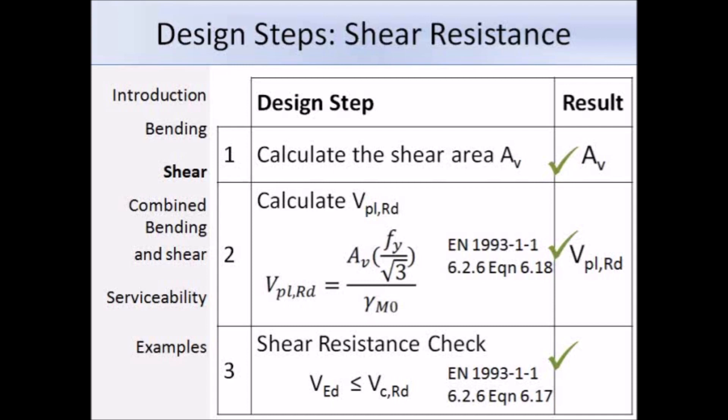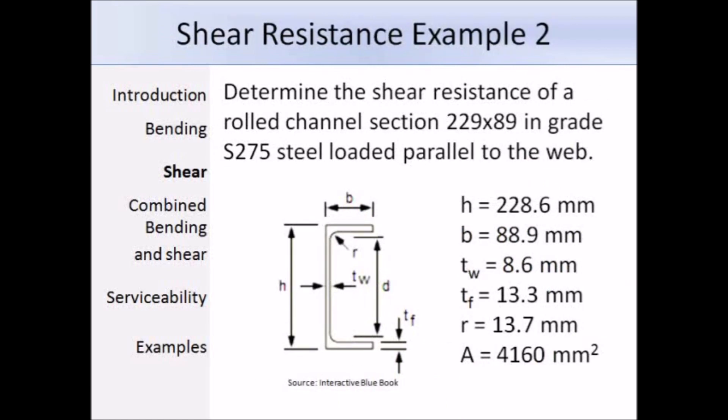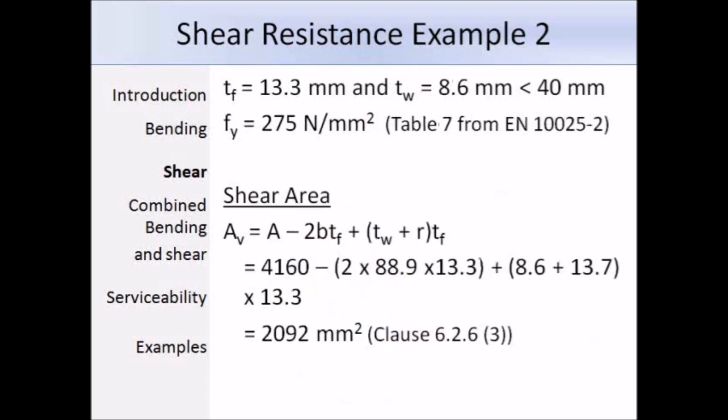Here is another example and I'll go through it step by step and then compare the results worked out by hand to the results worked out using the Master Series software. So here we have a rolled channel section, 229 x 89 in grade S275 steel. Here is a screenshot from the blue book showing the section and some dimensions. The terminology you might not be used to, but it's easy to figure out what the terms mean. We have the height and breadth of the section, the web and flange thicknesses and the root radius and the total area A. The flange thickness is 13.3 mm, the web thickness is 8.6 mm and these are both less than 40 mm. So from table 7 of BS EN 10025-2, for grade S275 steel, you get a yield strength of 275 newtons per millimetre squared.